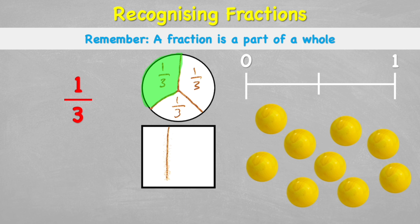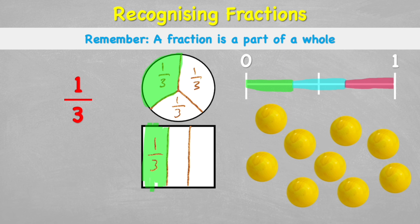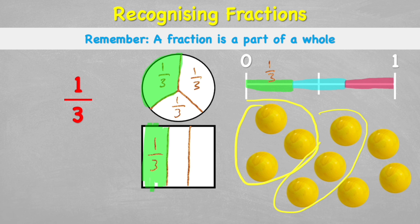With a square, I can make three equal columns and colour one third in green. On the number line, splitting one into three gives three equal sections, and the green section is worth one third. A third of the marbles means putting them into three equal piles — three marbles in each pile.